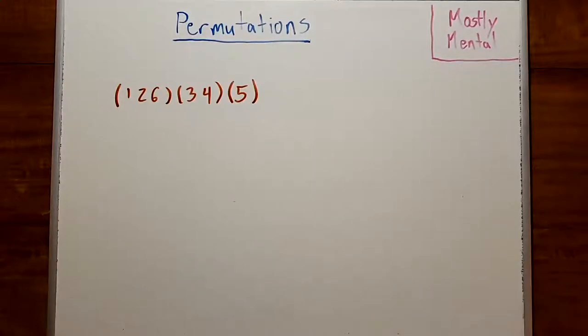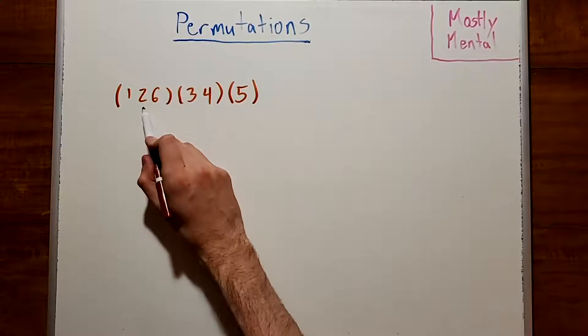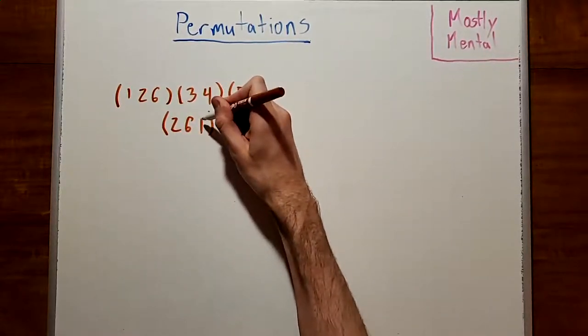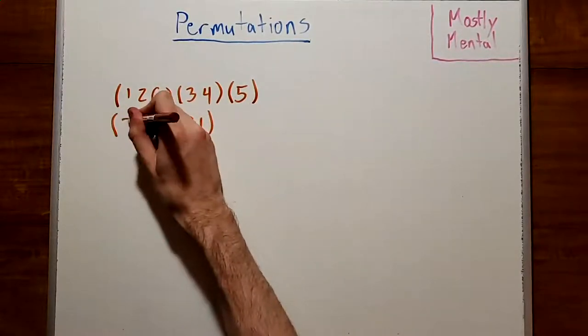There's actually a bit of leeway in this cycle description. After all, there's no reason we had to start this first cycle with the 1. We could just as well have started it with the 2 to get (2, 6, 1). Or we could have started our representation with another cycle.